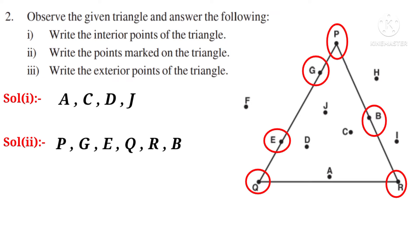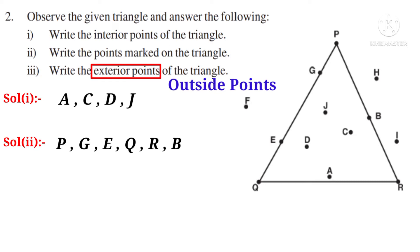Number 3. Write the exterior points of the triangle. Exterior means outside points. The outside points of the triangle are F, I and H.